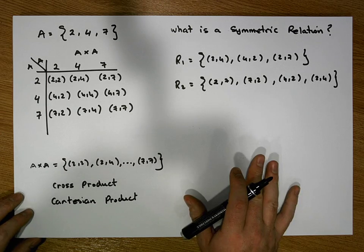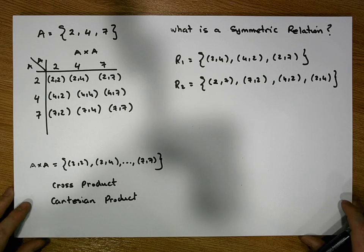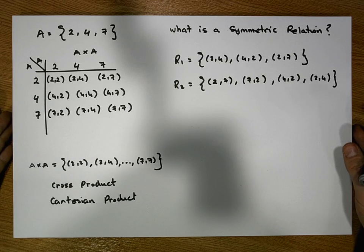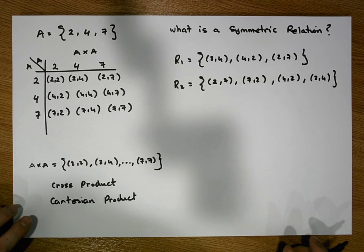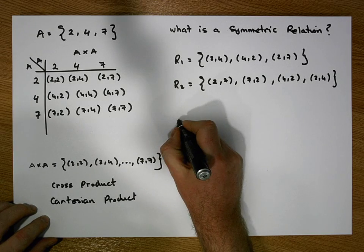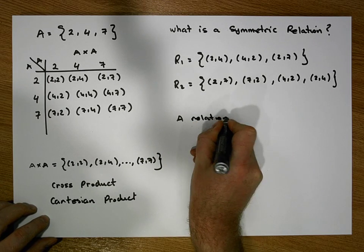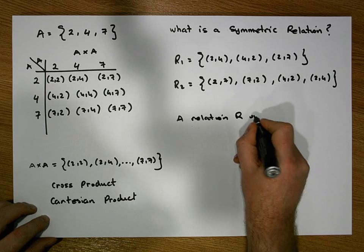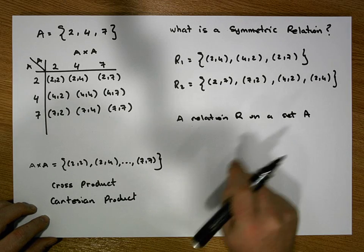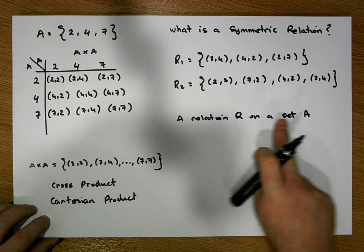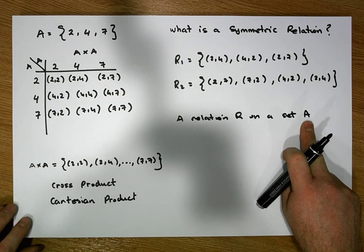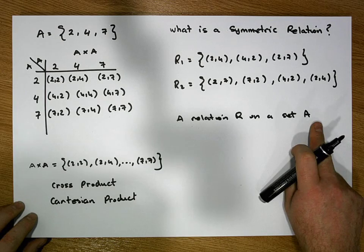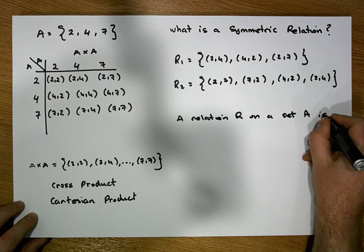We have a definition. The definition can be a little bit complicated in terms of the words used, but let's try to walk through it. We say: a relation R on a set A — meaning R is a subset of the cross product of A with itself — is symmetric.